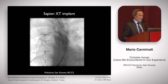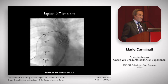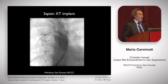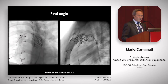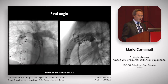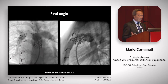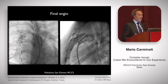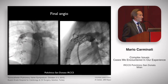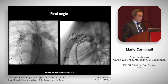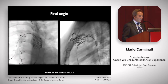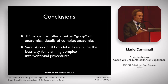So we went ahead and planned the SAPIEN implant, which in this particular patient was the easiest part of the procedure. That's the final result, as you see here, with a perfectly competent valve and no residual obstruction. The result was really very, very good.